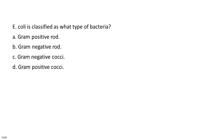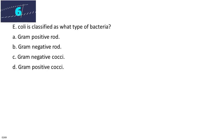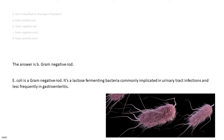E. coli is classified as what type of bacteria? A. Gram-positive rod. B. Gram-negative rod. C. Gram-negative cocci. D. Gram-positive cocci. The answer is B. Gram-negative rod. E. coli is a gram-negative rod. It is a lactose-fermenting bacteria commonly implicated in urinary tract infections and less frequently in gastroenteritis.